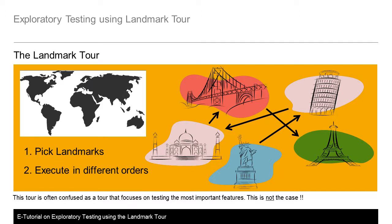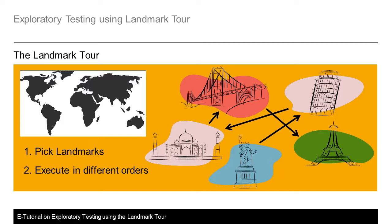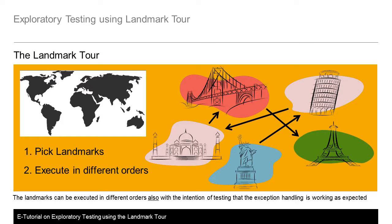This tour is often confused as a tour that focuses on testing the most important features — this is not the case. It is important to stress that the landmark tour is all about the order of execution. The landmarks can be executed in different orders, also with the intention of checking that the exception handling is working as expected. This means you should also try and test certain invalid sequences.